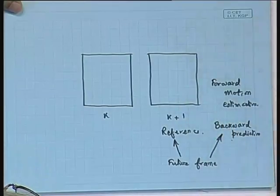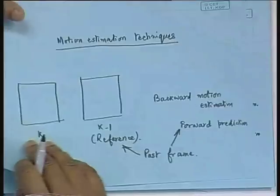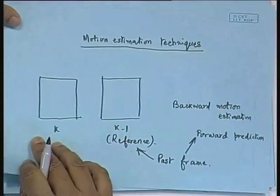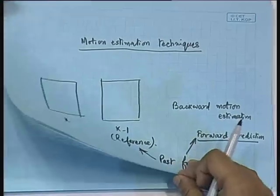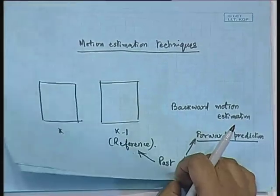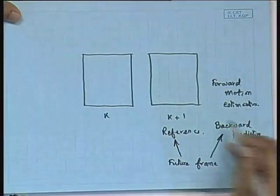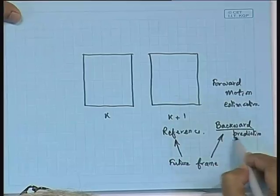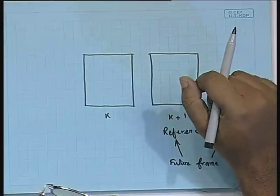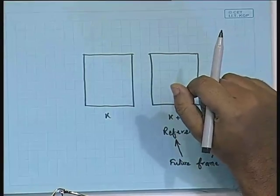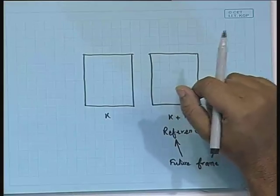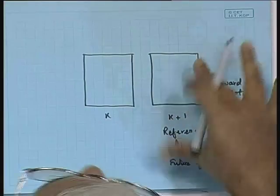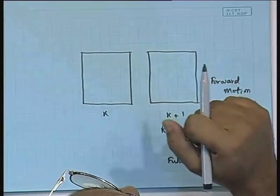So the first case we discussed was forward prediction, and what I have just described is backward prediction. Now, when is forward prediction required and when is backward prediction required?